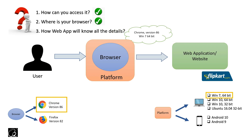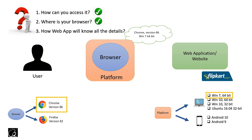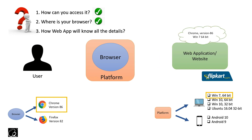All this user agent information is already there in your browser. But how will your web application know these details? When you want to access a web application or website, you send a request from the browser to that web application — that request would obviously be an HTTP request. This HTTP request will carry the user agent information in the HTTP header. So when you send an HTTP request, this user agent information will be transferred to the web application through the HTTP header.